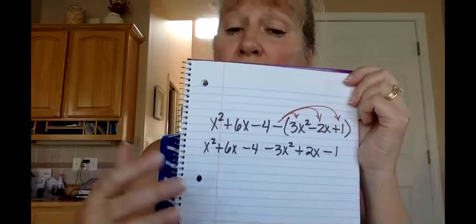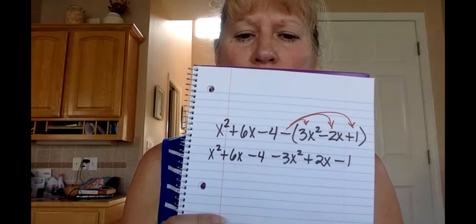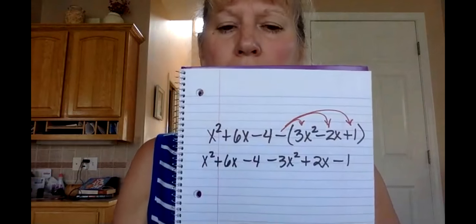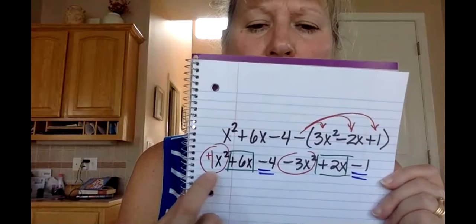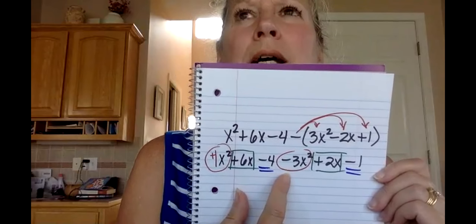Once you've distributed the minus, look for like terms to combine. I see x squared terms: 1x squared and minus 3x squared. I see x terms: plus 6x and plus 2x. I see constant terms: minus 4 and minus 1. I'll use colored pens to circle and square the matching groups.